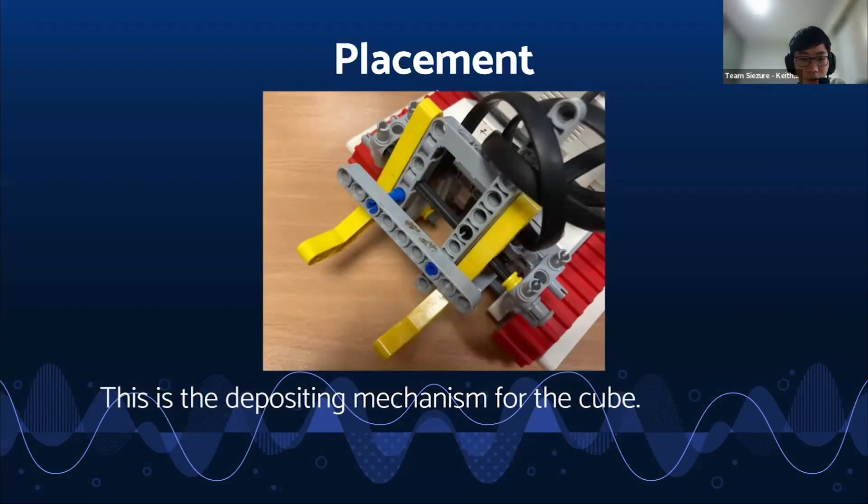This is the depositing mechanism. It works a bit like a catapult or lever. The cube will be preloaded into the mechanism and then the robot will reverse into the wall of the zone where we need to deposit the cube. This will push the yellow levers backwards and the cube will be pushed out into the zone.